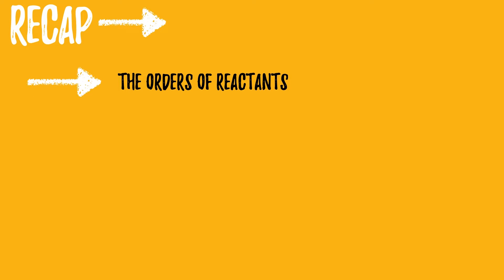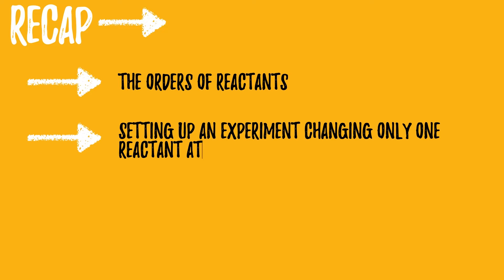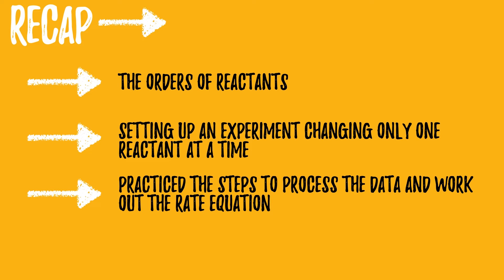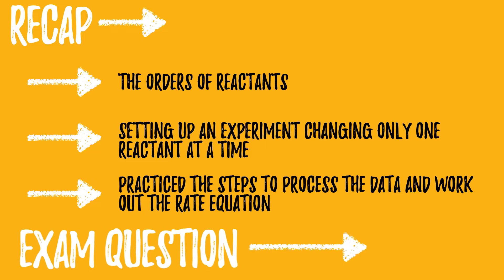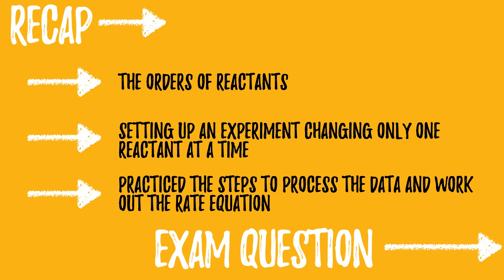Now let's take a quick recap. We started off the video by looking at the different orders of reactants — zero order, first order, and second order. Then we covered how to set up an initial rate experiment to generate the data that you need to work out the rate equation, remembering to change only the concentration of one reactant at a time. And then finally we looked at the four step process to analyze a data set and work out the rate equation. We're going to use this now to have a go at answering a more complicated exam question.